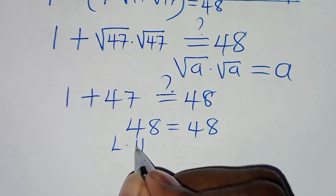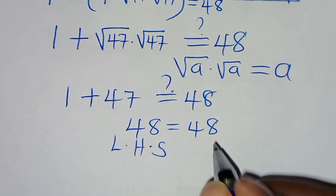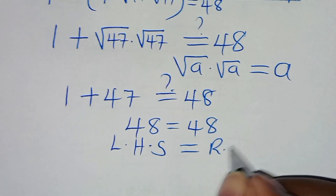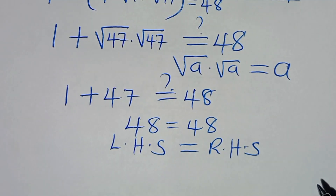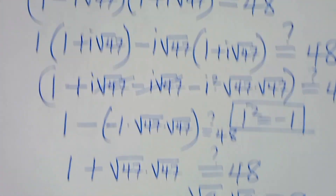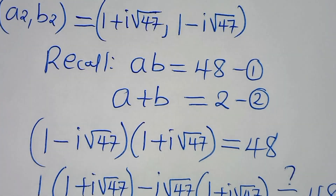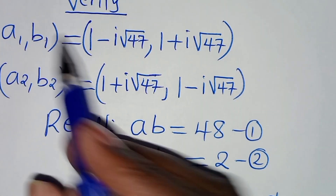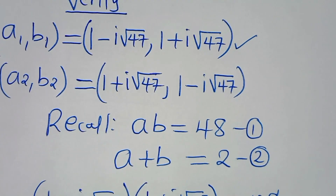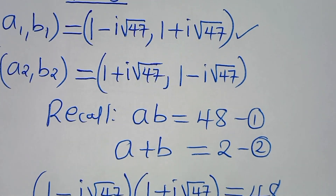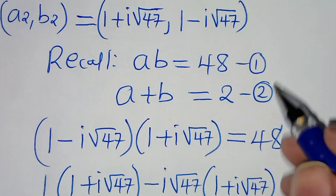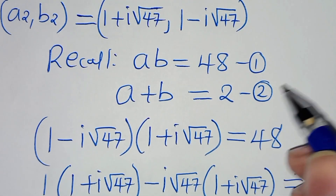This implies that the left-hand side equals the right-hand side, and therefore a1, b1 satisfies equation 1. Now let's check a2, b2 by applying equation 2.